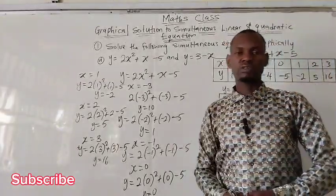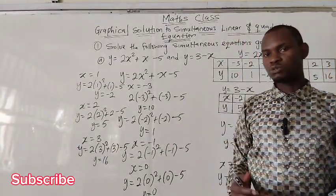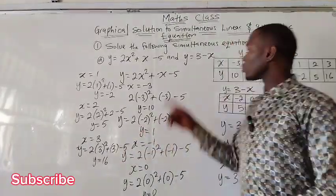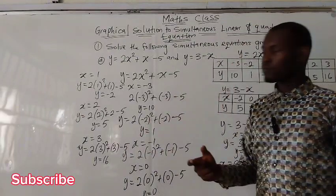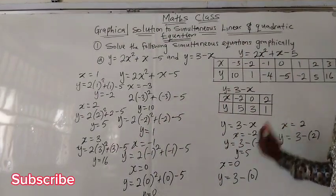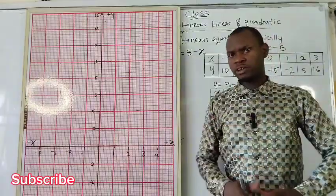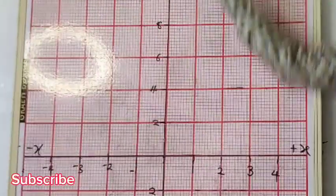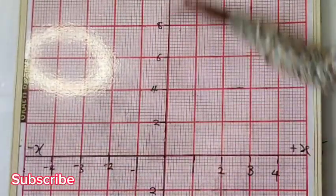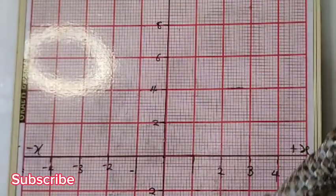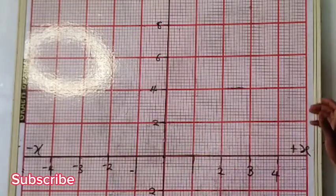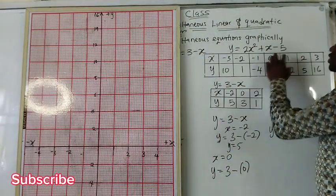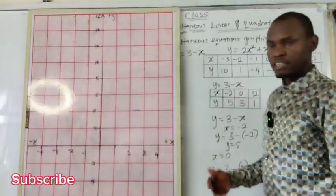The next step is to plot the graph. From the graph, we will be able to determine the roots — where the straight line and the curve intersect. The quadratic gives us a curve; the linear gives us a straight line. To plot the graph, we prepare the Cartesian plane with the y-axis and x-axis: positive y upward, negative y downward, positive x to the right, negative x to the left.